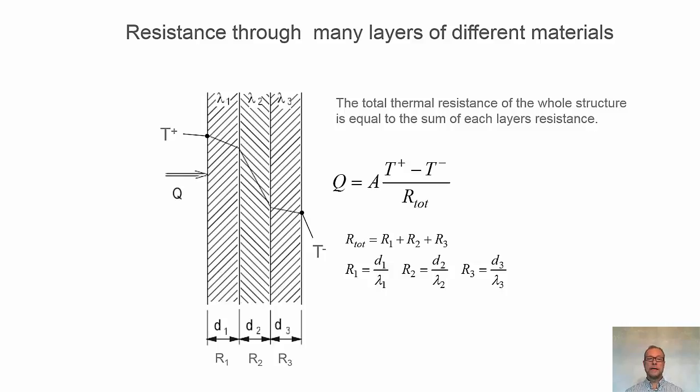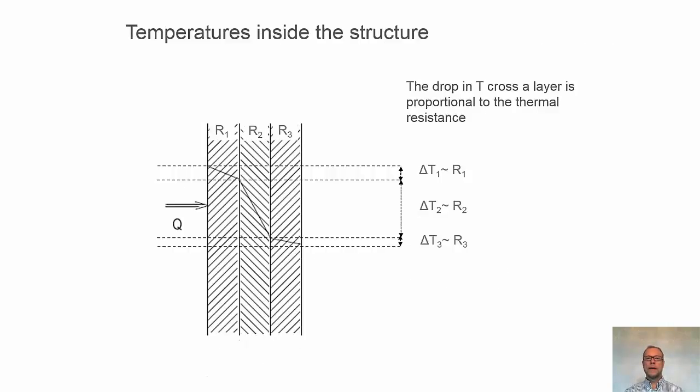We also see that the temperature falls linearly in each of the layers. The temperature drop for each layer is directly proportional to the thermal resistance of the layer. If we have very high thermal resistance in one layer, there will be a big drop in the temperature at that spot.